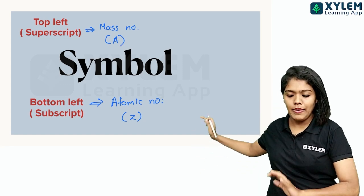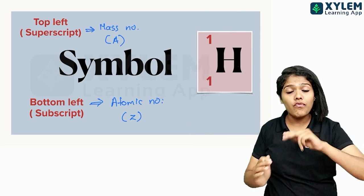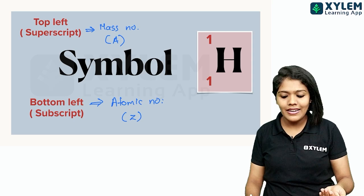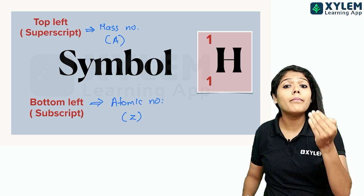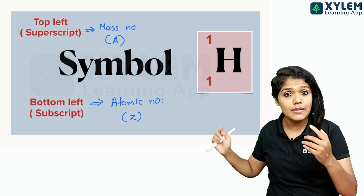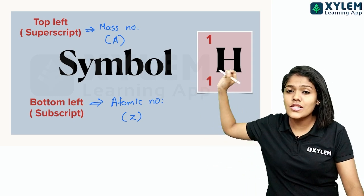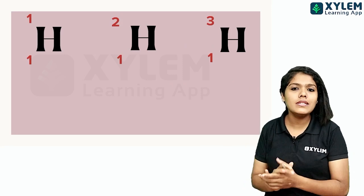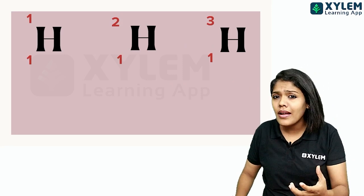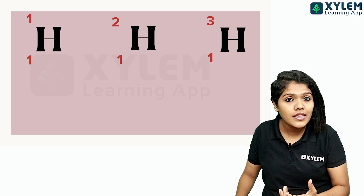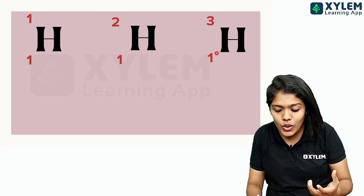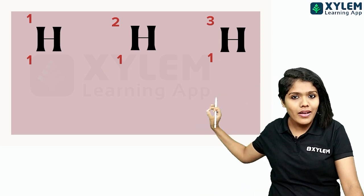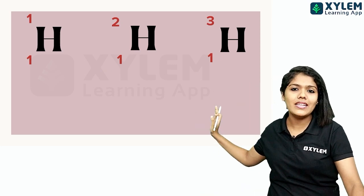In this example, hydrogen H-1-1: the atomic number is the subscript 1, and the mass number is the superscript 1. So in these hydrogen atoms, the subscripts — that means the atomic numbers — are all the same, all equal to 1.